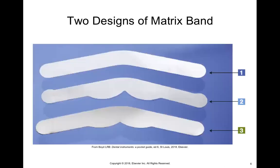If the cavity is reaching into or underneath the gingiva, we use the extender band because it provides a border down below the gum line. Here are examples of what those matrix bands look like: number one is the universal band we practiced; number two is the extender for a pediatric patient; and number three is the extender for an adult patient. Those two little humps in the middle help the band go below the gingiva.